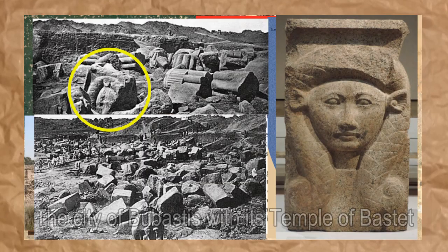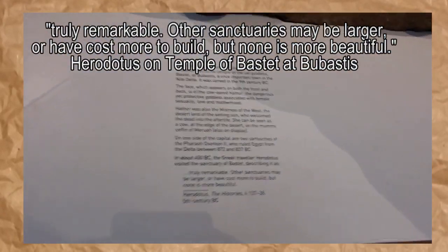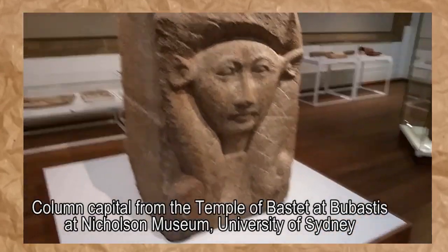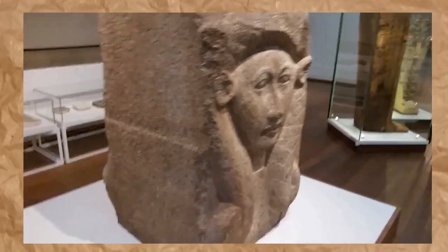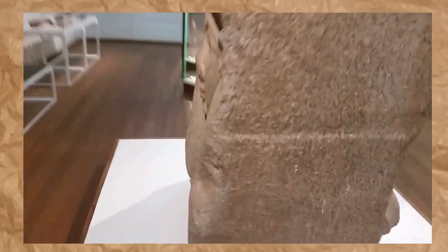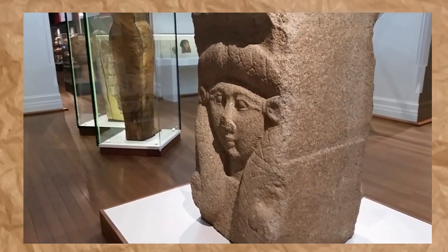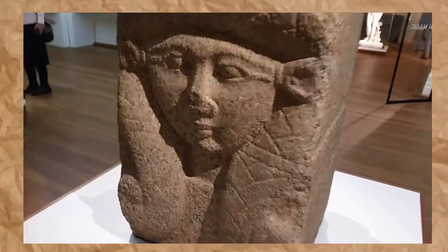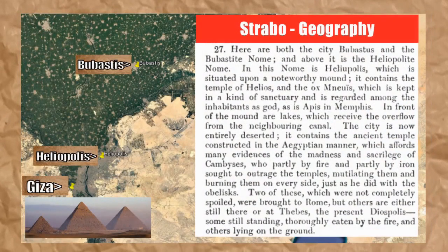As Bubastis was in the Nile Delta and the yearly flooding cycle was still such a defining event, it should be no surprise that it was built on a mound. Though more than a temple, Bubastus was also a significant city, and the mound upon which it was built appears to be largely man-made. Just like Heliopolis, the temple at Bubastis has been almost entirely destroyed and the mound leveled for farming. One of the surviving column capitals from that temple is now here in Sydney, in the collection of the Nicholson Museum at the University of Sydney. Moving south from Bubastus, Strabo then comes to Heliopolis, paying special attention to both the site and the importance of the priesthood that once lived there.